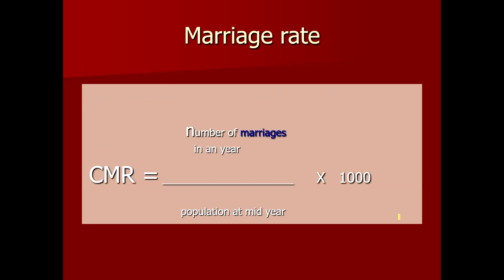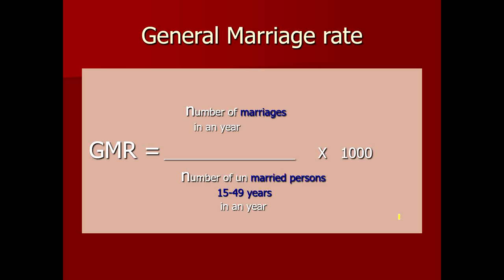The crude marriage rate is the total number of marriages registered in a year in a specific area divided by the total mid-year population, multiplied by 1000. It is a very crude rate because not the entire mid-year population is of marriageable age. The general marriage rate is more specific: it calculates the total number of marriages in a year divided by the total number of unmarried persons between 15 to 49 years of age in that community, multiplied by 1000.